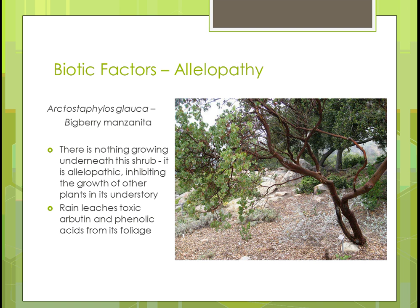Allelopathy. Here's an example of Bigberry manzanita, and what it does — if you remember allelopathy from Part 1 of this unit — is that a substance is given off by the organism. In this case it's that Bigberry manzanita, and it gives something off so that nothing's going to grow underneath it. That bare area underneath that shrub is called allelopathy.